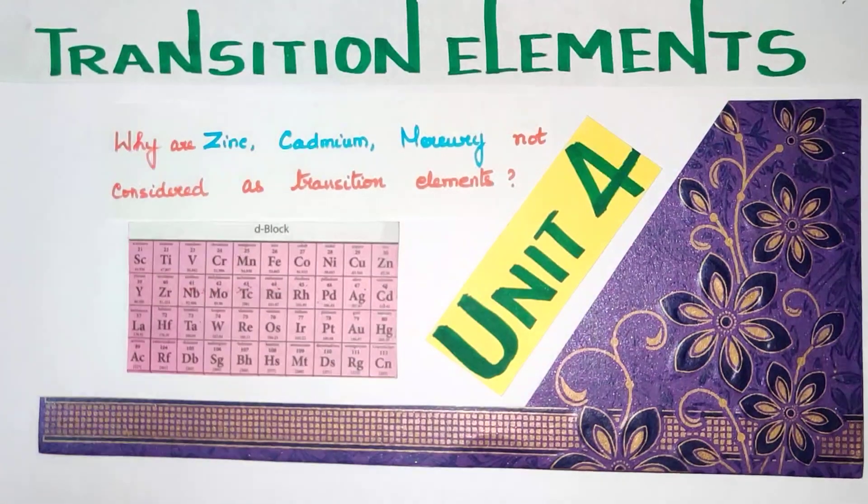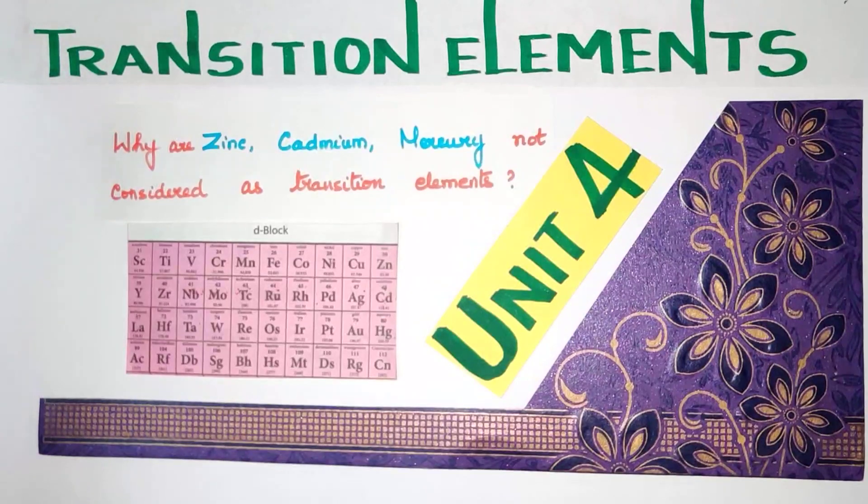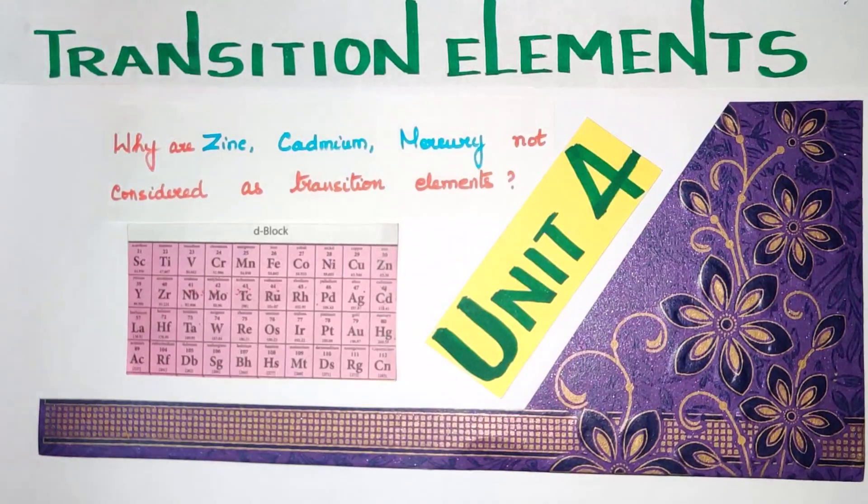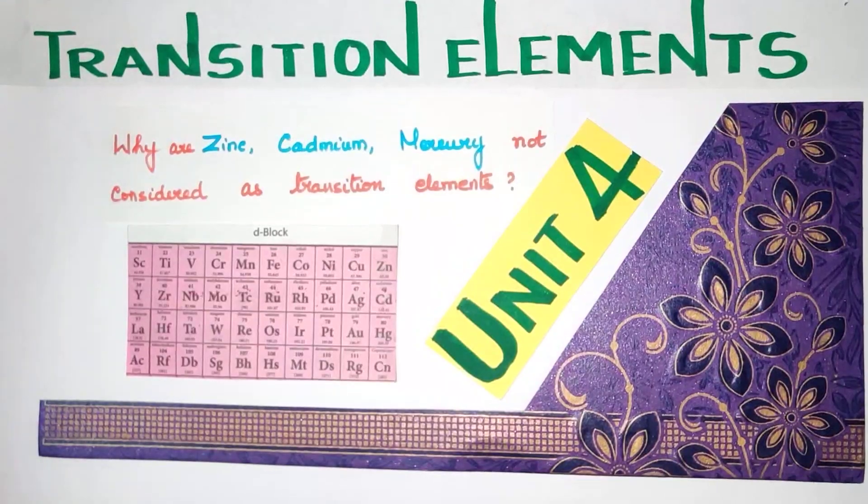Hello students, welcome. Unit 4 Transition Elements chapter. Why are Zinc, Cadmium, Mercury not considered as Transition Elements? We will discuss this question in this video.